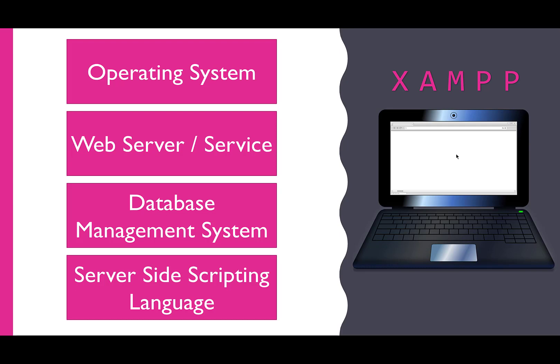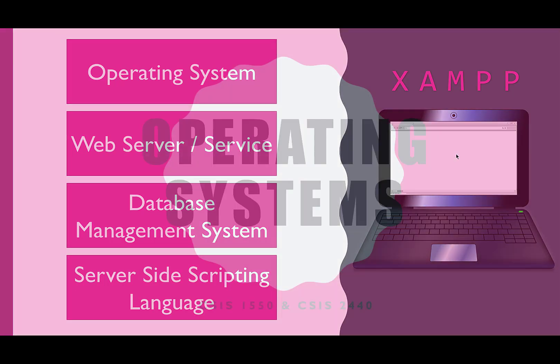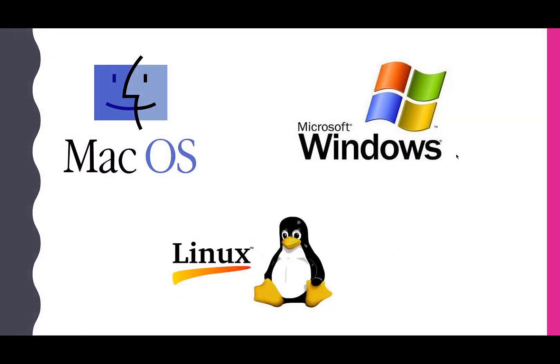Let's look at the different options. First, operating systems — the big three are macOS, Microsoft Windows, and Linux. There are other operating systems out there, like SPARC workstations from Sun Microsystems, but these three are the main ones we care about. It just so happens that an XAMPP setup will work with any of these three — and in fact, that's what the X stands for: it stands for cross-platform.